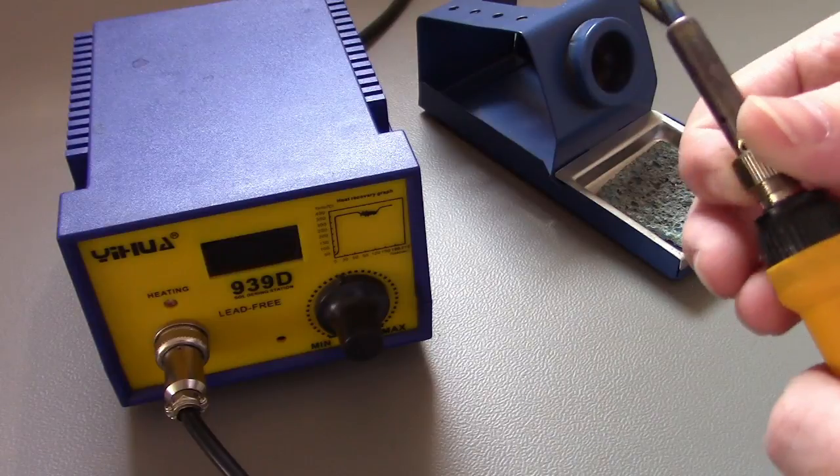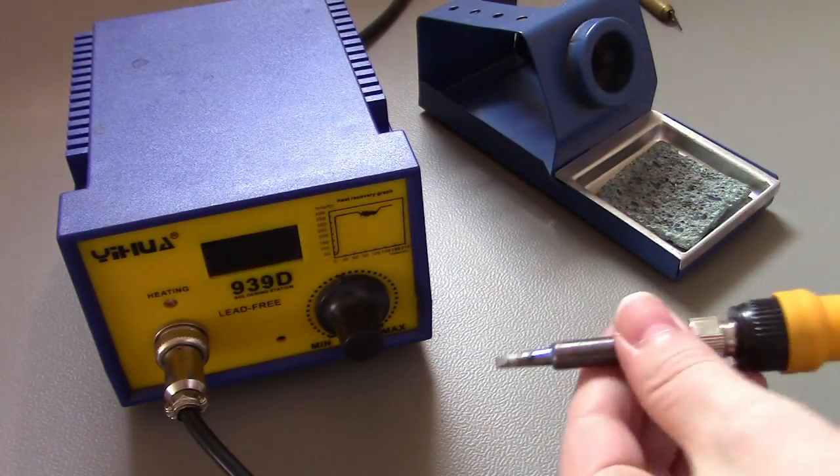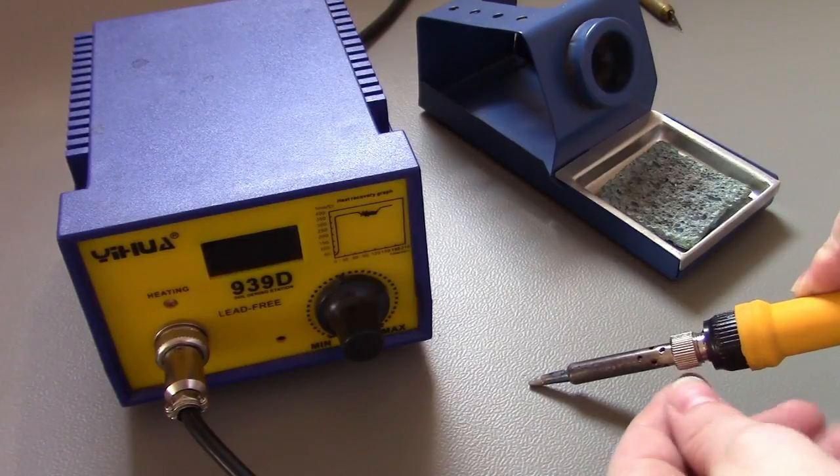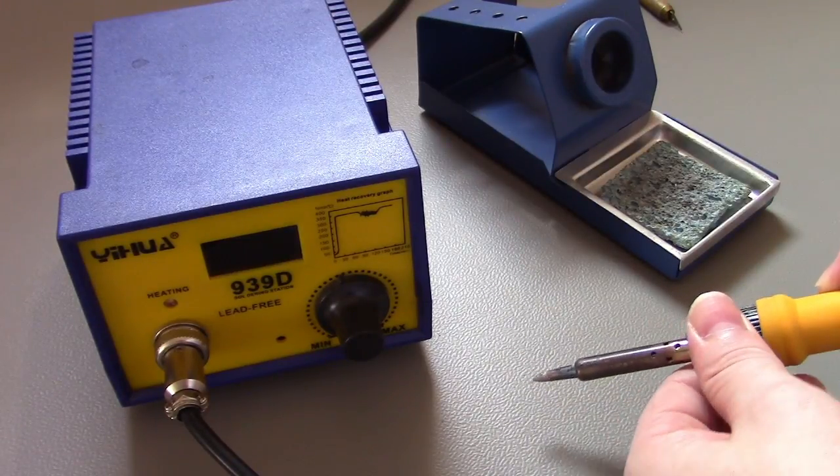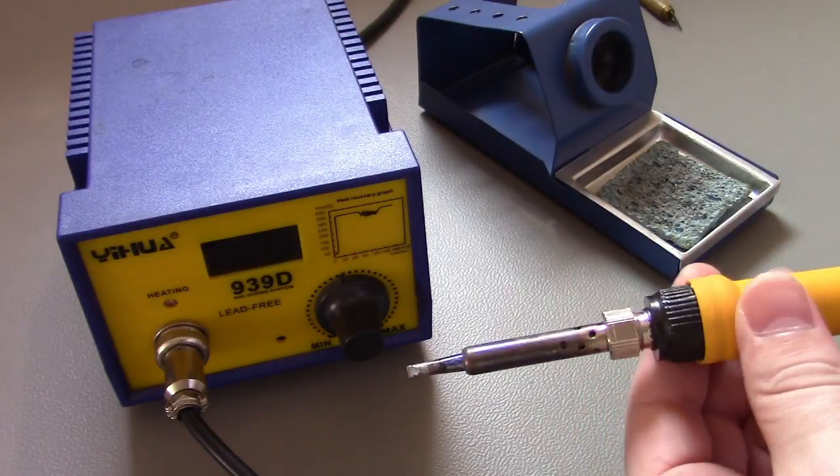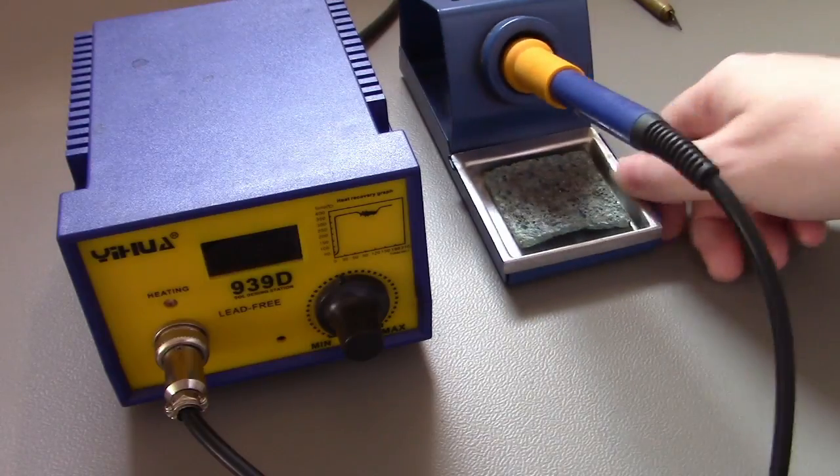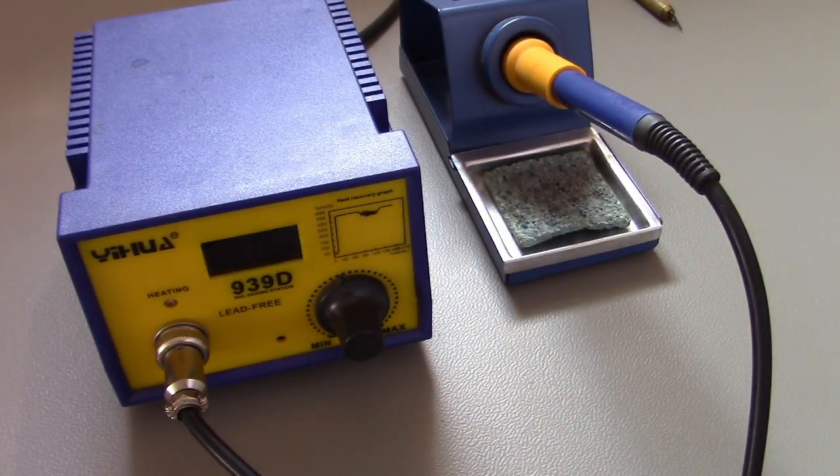The only thing I would say when I first got it, I wasn't actually applying much pressure at all to a surface, but I managed to snap it completely on this plastic. So I got onto the eBay seller and they actually happily sent me a replacement iron for the unit.